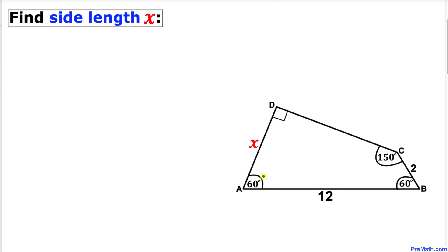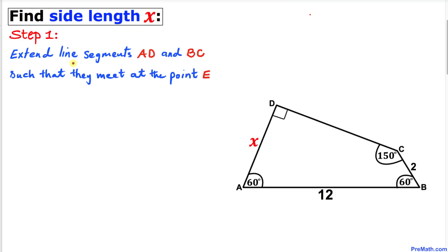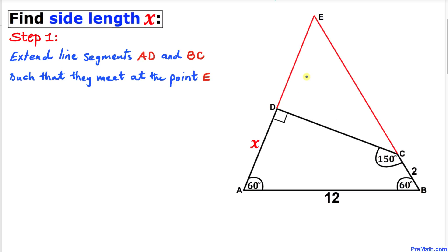If we look closely at our diagram, we can see that angle A and angle B are both 60 degrees. So we are going to think outside the box. Our first step: let's extend line segments AD and BC such that they meet at a point E. Let me connect point D to E and point C to E, giving us a much nicer looking diagram.